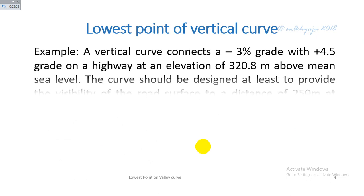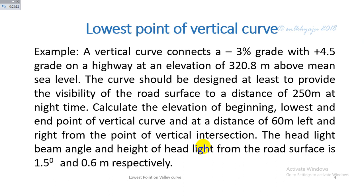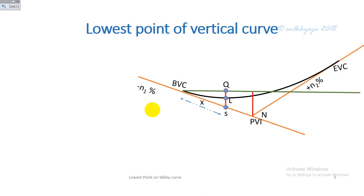Now for an example: a vertical curve connects a −3% grade with a +4.5% grade on a highway at an elevation of 220.8 meters above mean sea level. The curve should be designed to provide visibility of the road surface to a distance of 50 meters at night. Calculate the elevation of the beginning, lowest point, and end point of the vertical curve, and at a distance of 60 meters left and right from the point of vertical intersection. The headlight beam angle and height of the headlight from the road surface are 1.5° and 0.6 m respectively, and sight distance at night equals 150 m.